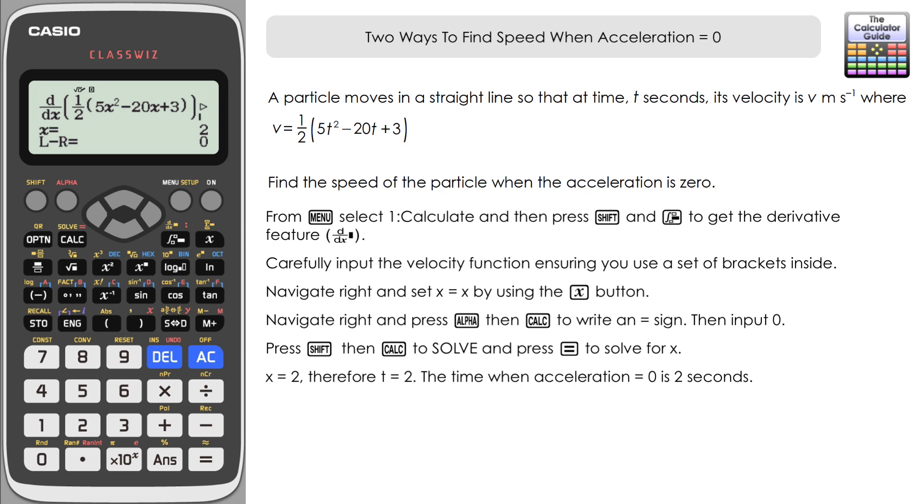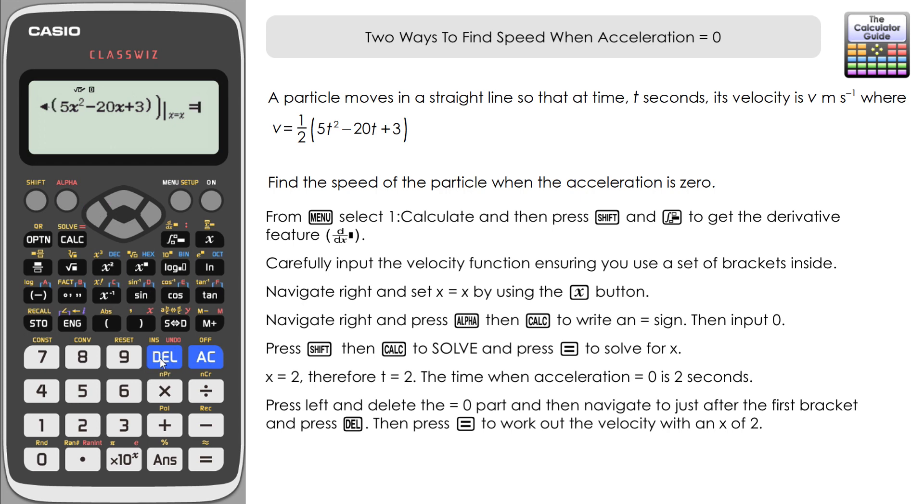Now what we're going to do is put that 2 seconds back into the velocity equation to be able to calculate what velocity and therefore what speed the particle is moving at. But it's very easy to do that as we've already got the function written in there. All we need to do is delete off the bits we don't need. So if you press left on the arrow keys and just delete off the equals zero bit, and you can either scroll left, although depending on how long your function is that might be the more lengthy option. It might be easier just to go right here.